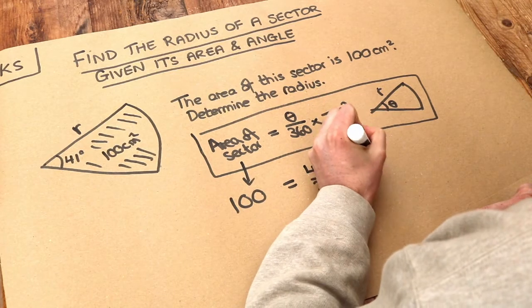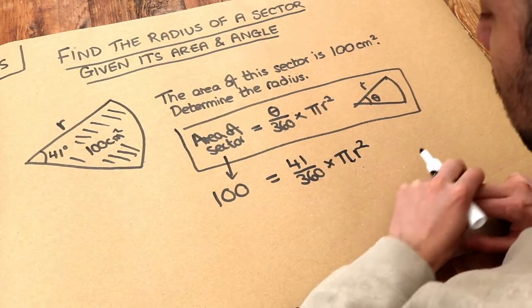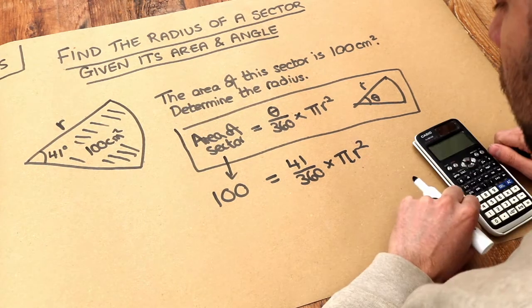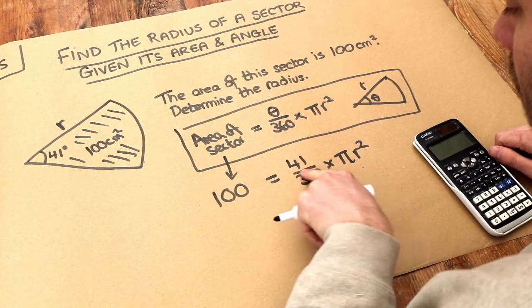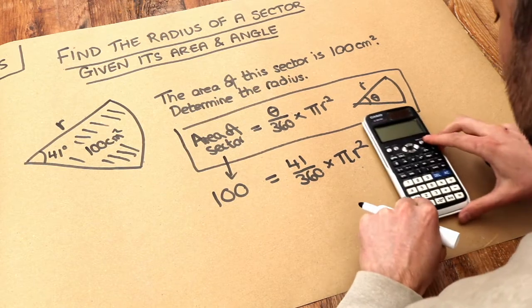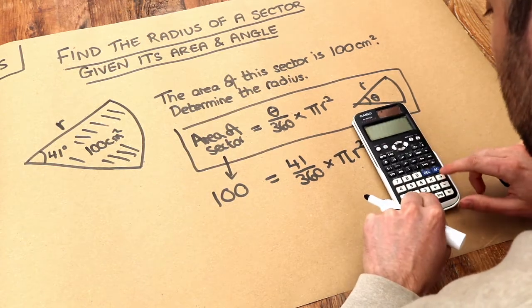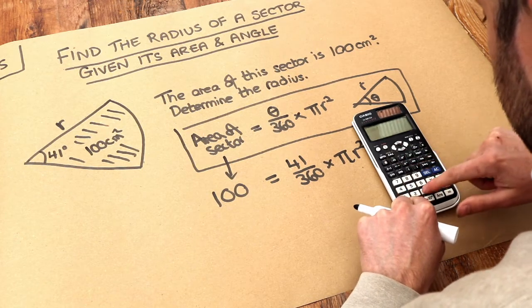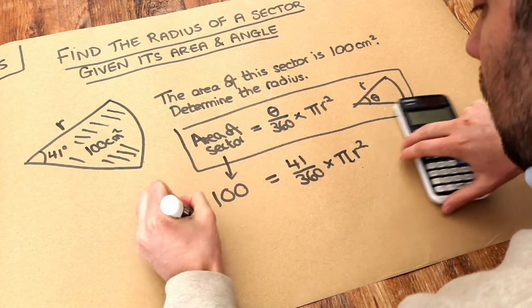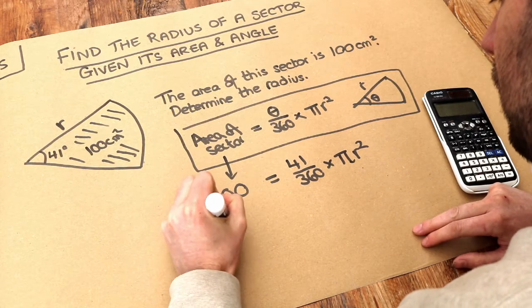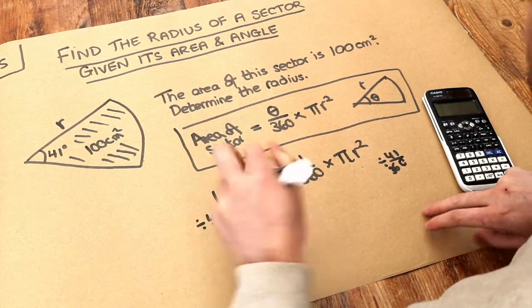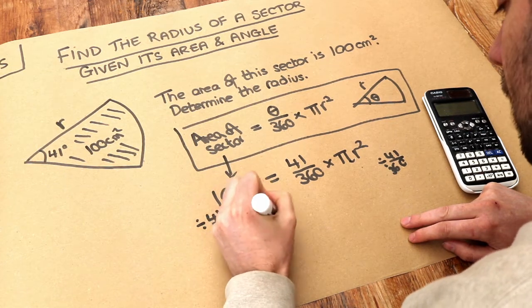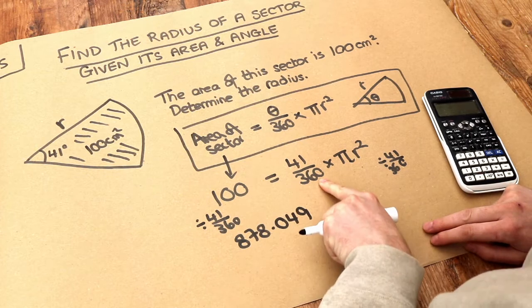So we've got this equation. Now we want to solve that, which means we need to find the value of R. Now what I could do first is get rid of this times by 41 over 360. So if I divide the 100 by 41 over 360, be careful how you type it into your calculator. So we're dividing both sides by 41 over 360, so the left hand side is now 878.049.